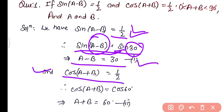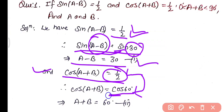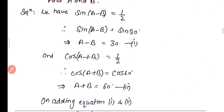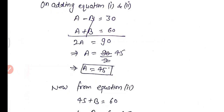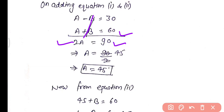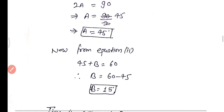Also cos(A+B) equals 1 by 2, and 1 by 2 can be written as cos 60 degree, so A plus B equals 60 degree — relation 2. Adding the two equations: A minus B equals 30 and A plus B equals 60, so 2A equals 90, giving A equals 45 degree. Substituting in equation 2: 45 plus B equals 60, so B equals 15 degree. Thus A equals 45 degree and B equals 15 degree.